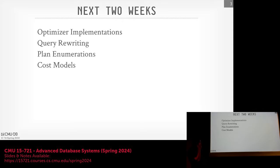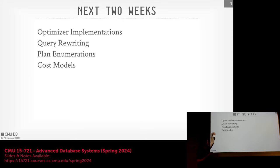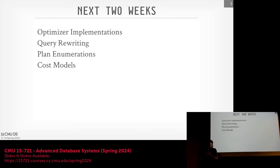The next two weeks will really focus on query optimization. Today's class and next class will talk about how you actually want to implement the optimizer itself at a high level — how you're going to define the rules, how you do the search to figure out what transformations to apply. We'll talk about query rewriting and plan enumeration. Cost models we'll discuss more next week. Next class will go further into the dynamic programming approach used by Hyper and Umbra. Then on Monday next week, we'll talk about adaptive query optimization — where the query runs for a bit and you make decisions on the fly whether to change things.